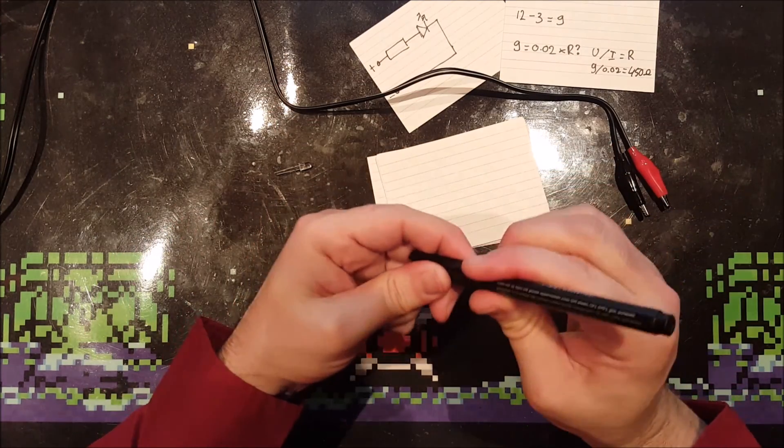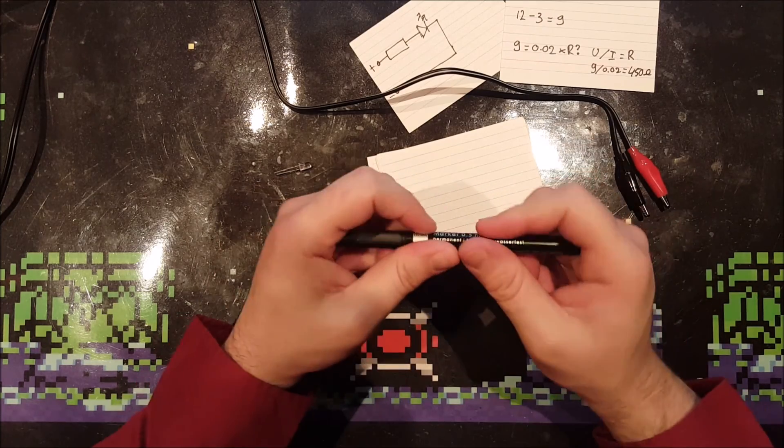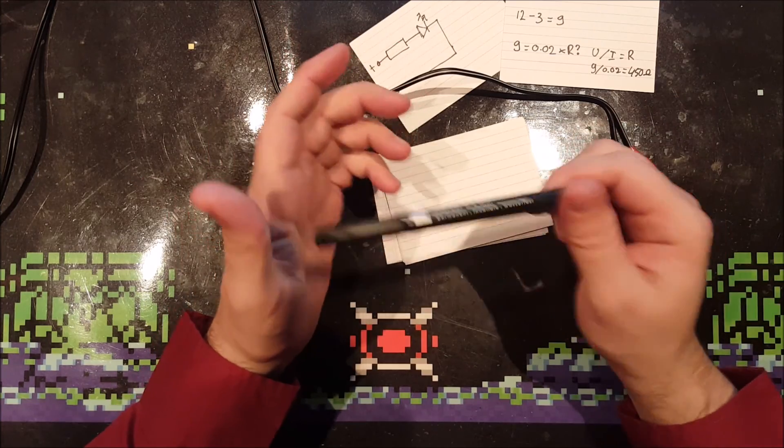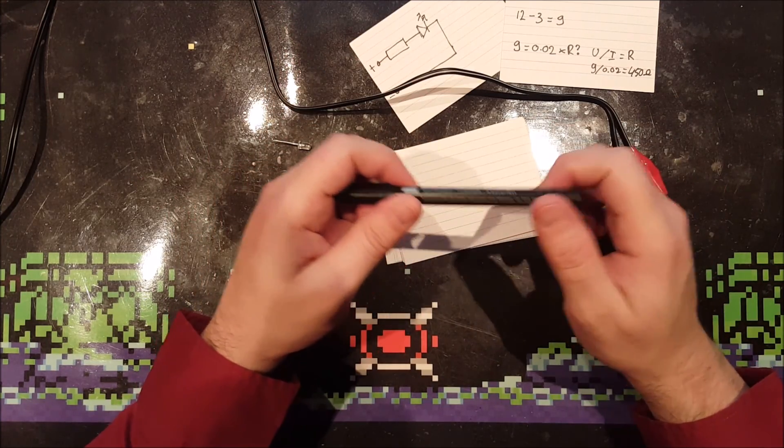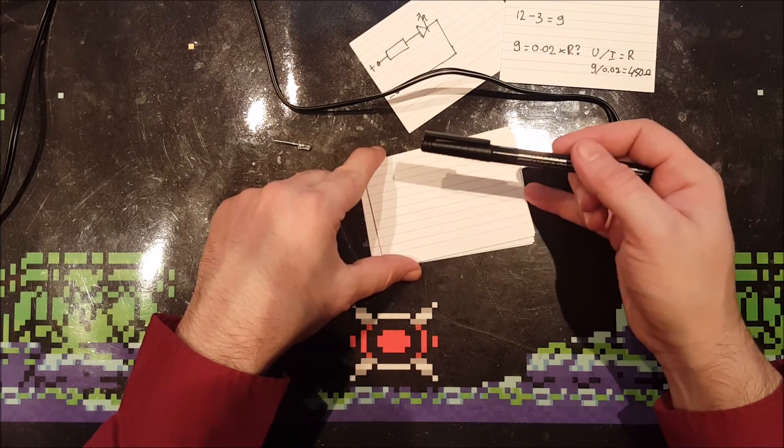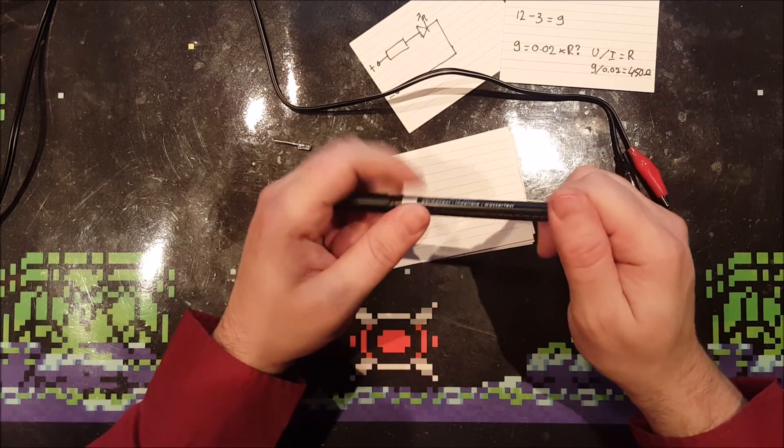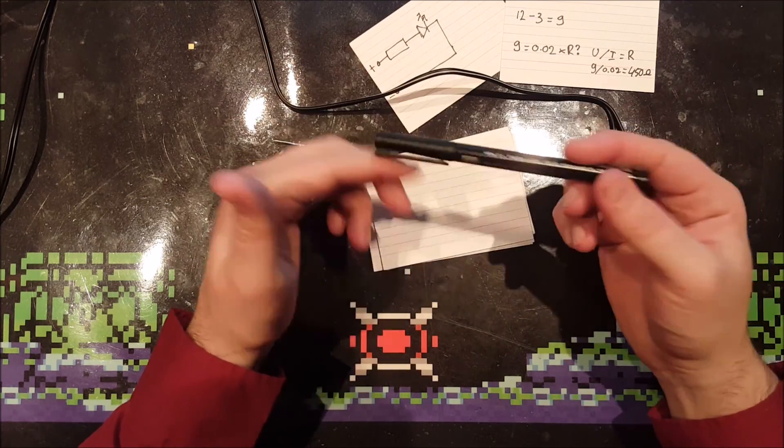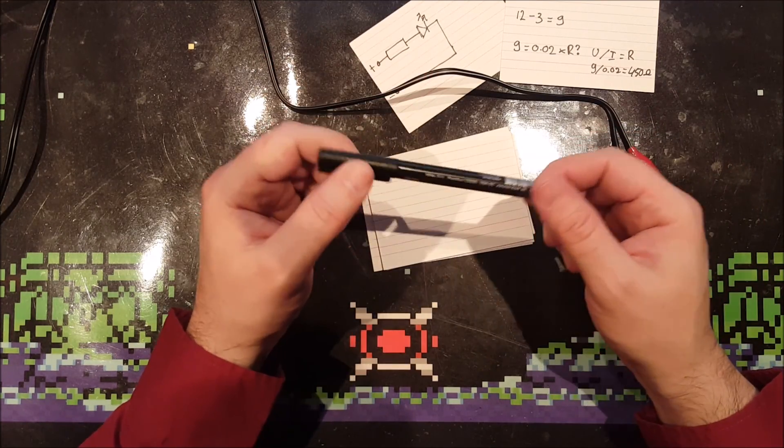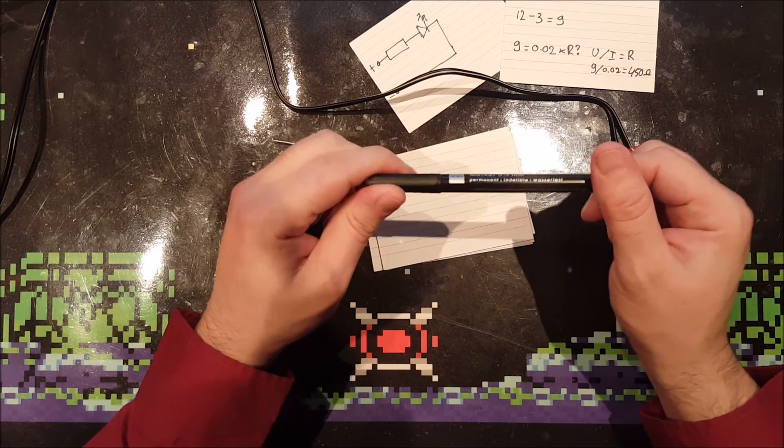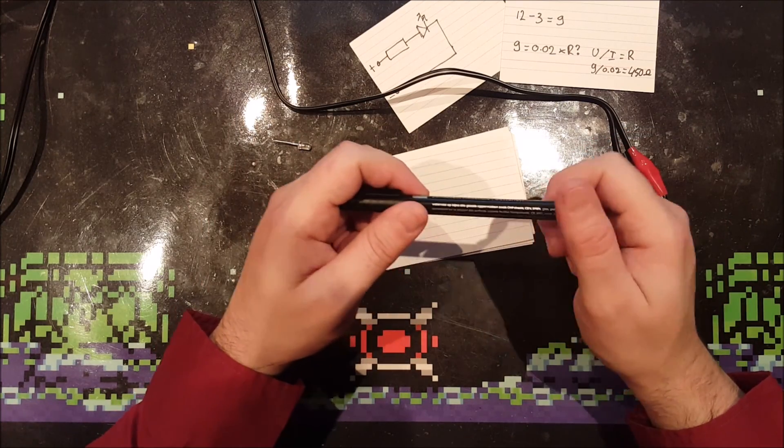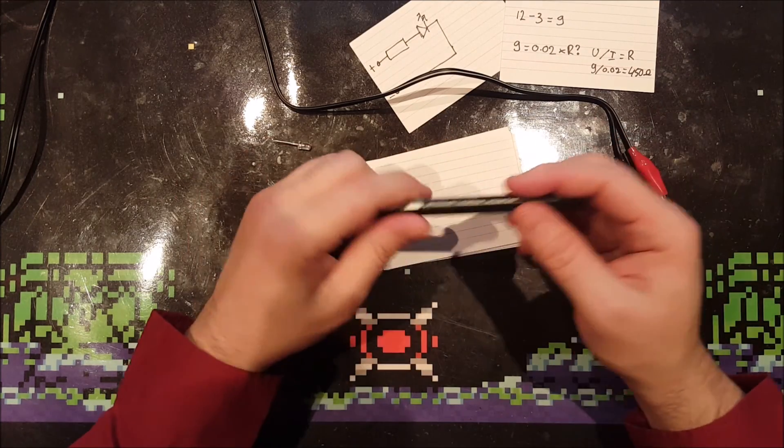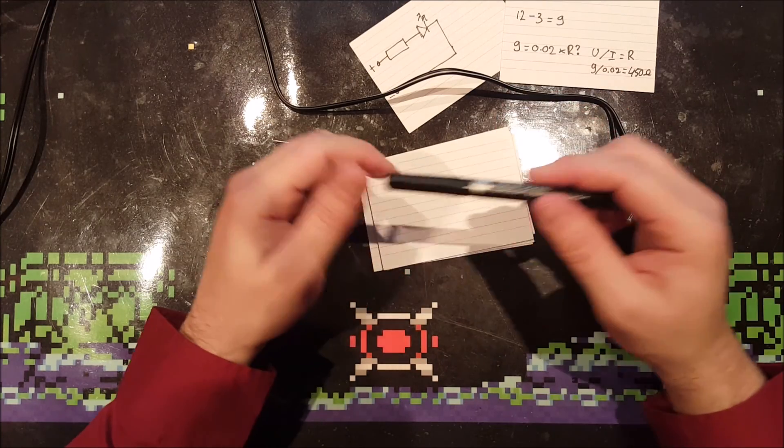Now we need to know what resistor to get. But if you have the standard 5% tolerance resistors like me, you probably do not have a 450 ohm resistor in stock. You have two options at this point: select the nearest higher value resistor or use two resistors in series. The nearest resistors are 430 and 470.